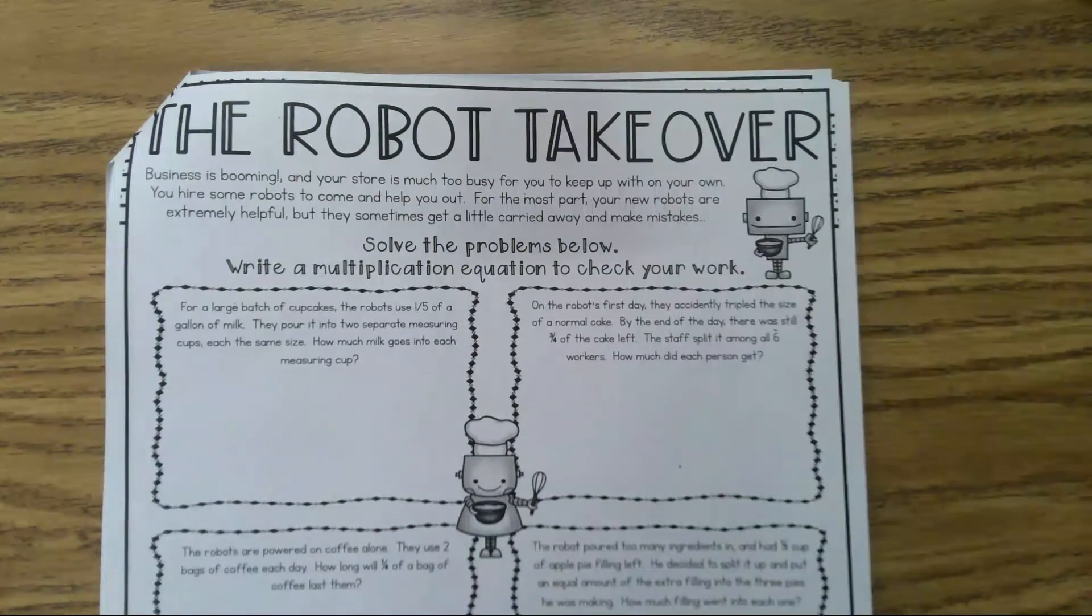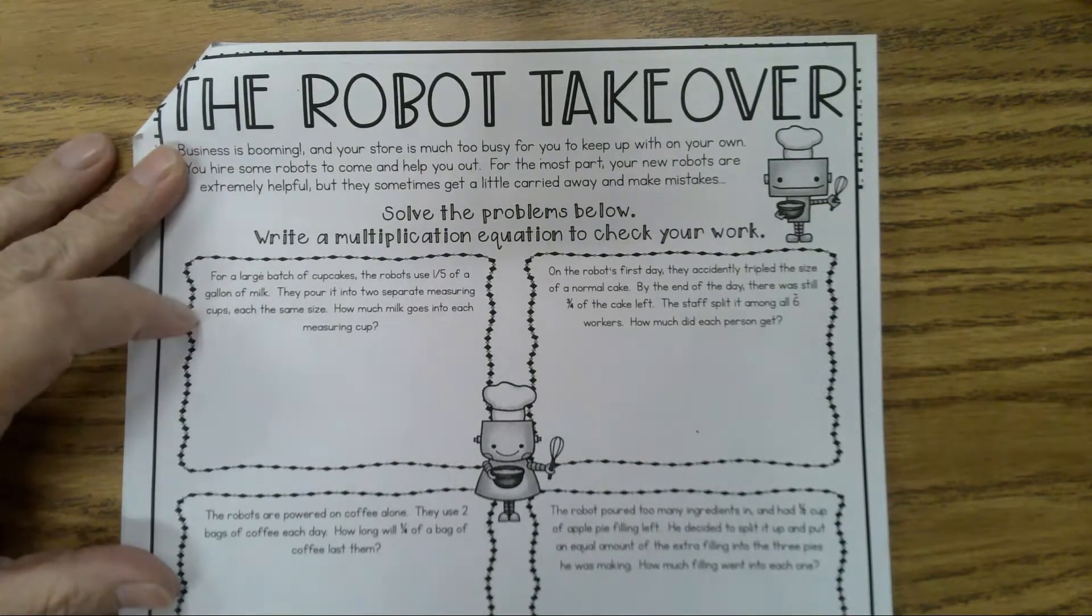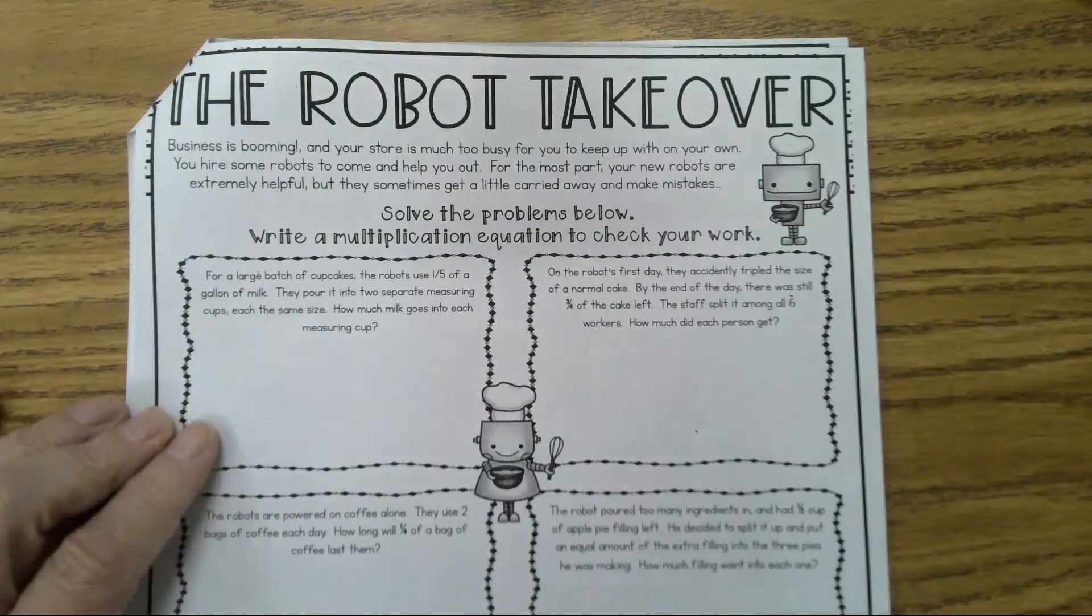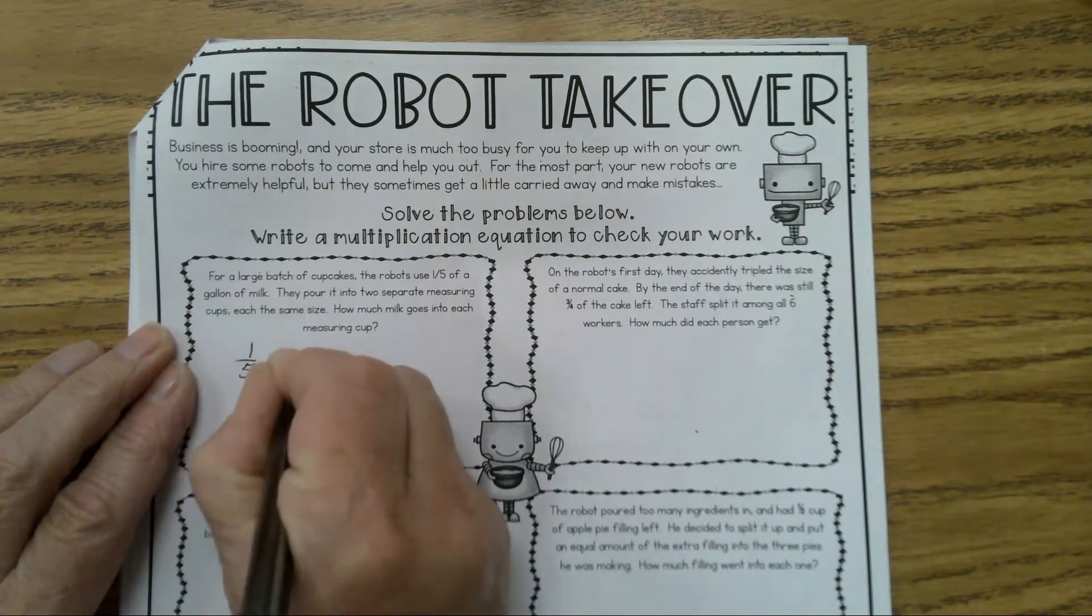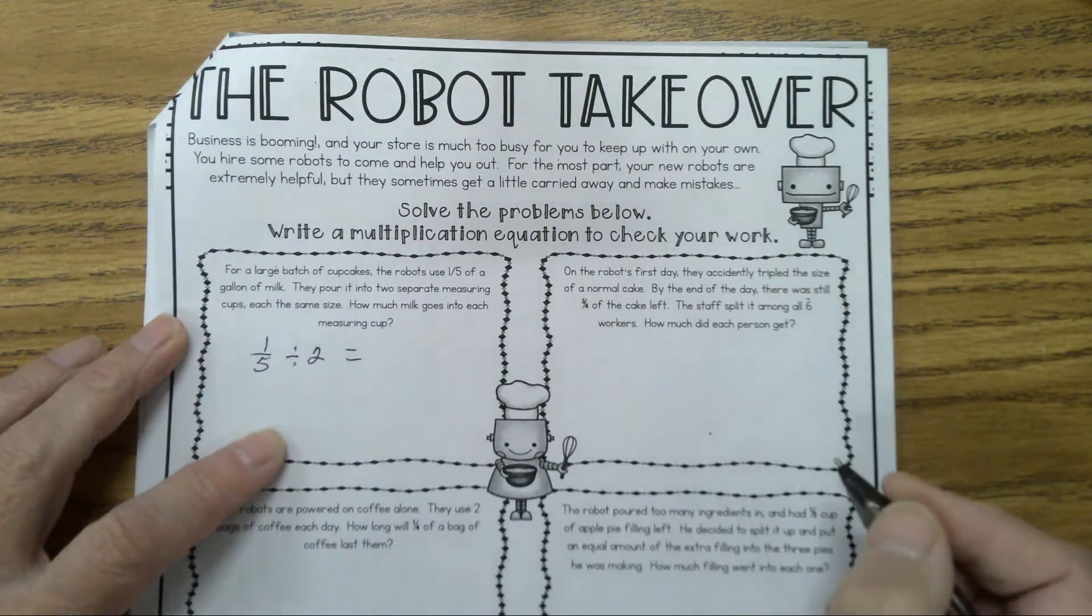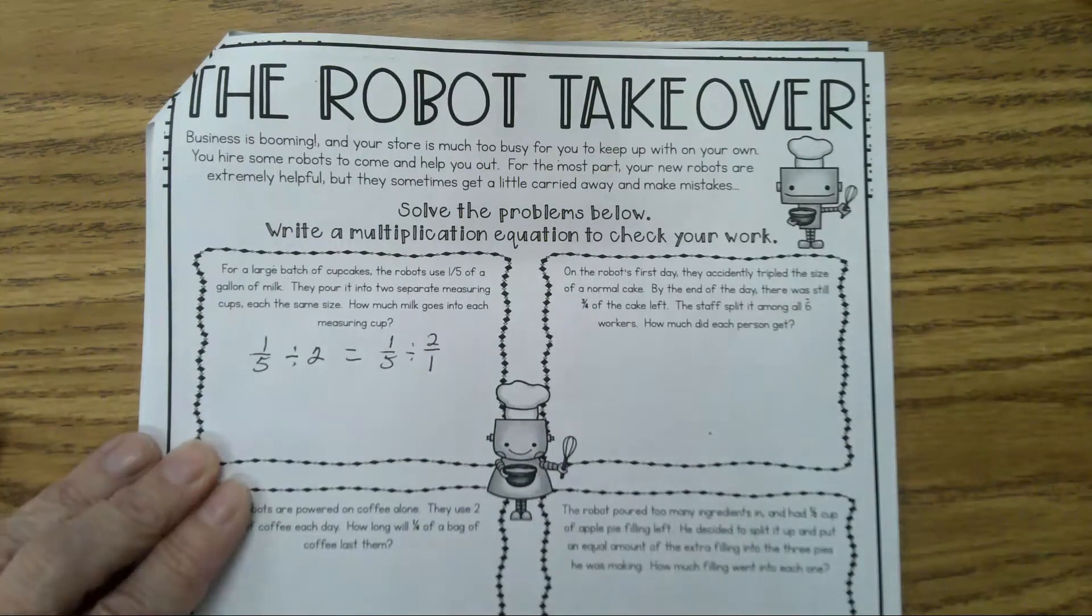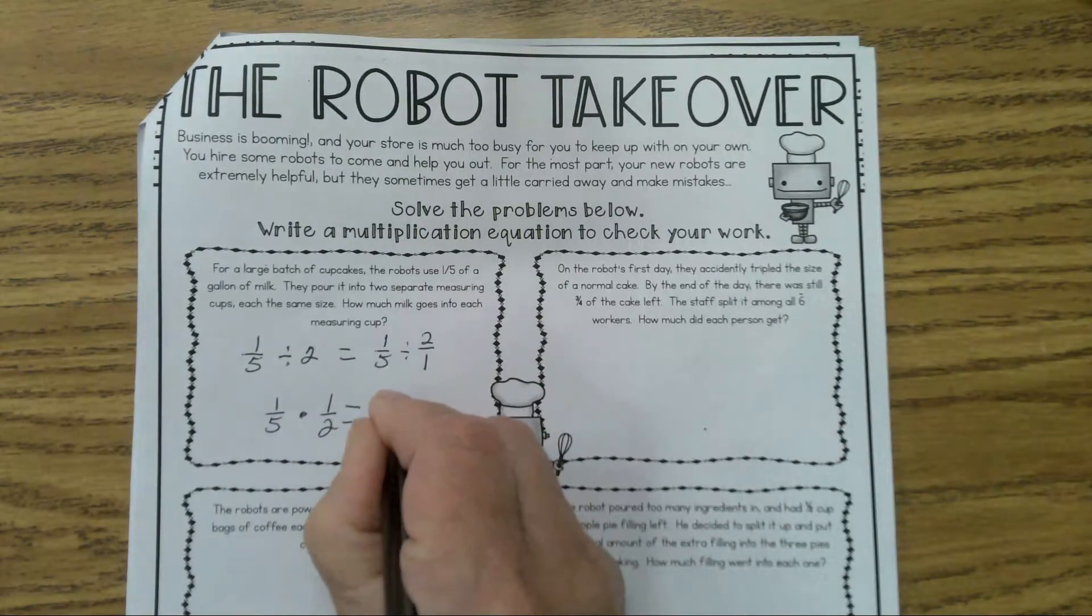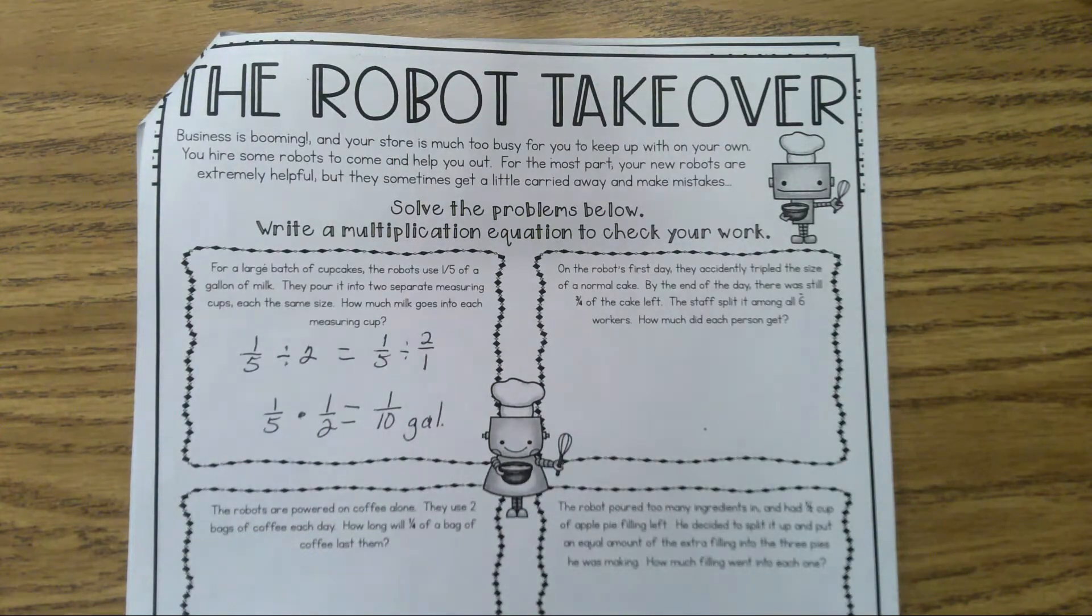Do I have a volunteer to read this problem? So this is 1/5 divided by how many measuring cups? Two. So 1/5 divided by 2. Well, we're dividing with fractions. We're going to keep, change, flip. That's the same thing as 1/5 divided by 2 over 1, right? So I have to change this to a multiplication problem. Keep, change, flip. What's the answer? 1/10. 1/10 of a gallon. And let's write the word G-A-L for gallon, we'll abbreviate it.